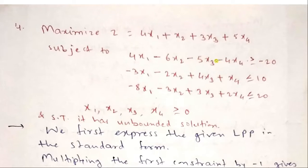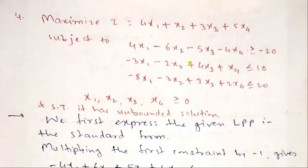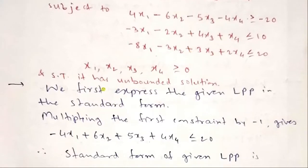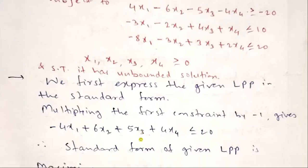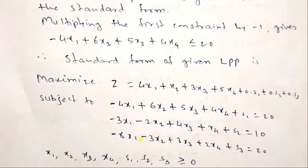You have to multiply the first constraint by minus sign. We will write down the standard form of this LPP. We first express the given LPP in standard form, multiplying the first constraint by minus 1 because RHS is negative. So 4x1 minus 6x2 minus 5x3 minus 4x4. Multiply this by minus sign: minus 4x1 plus 6x2 plus 5x3 plus 4x4 less than equal to 20.